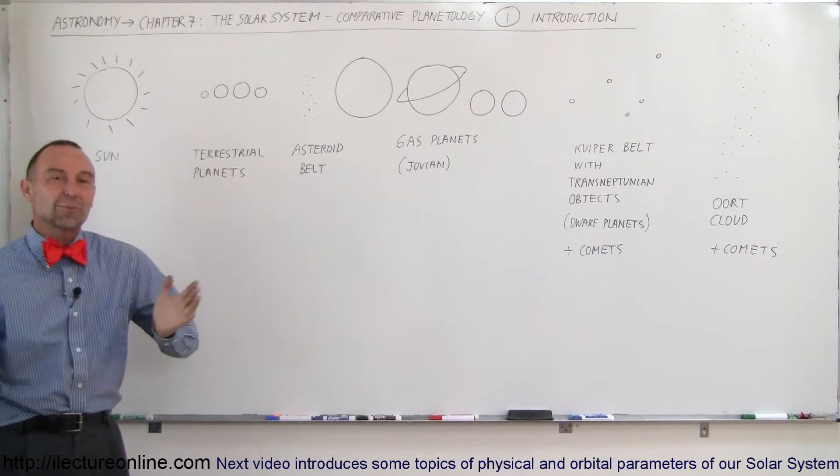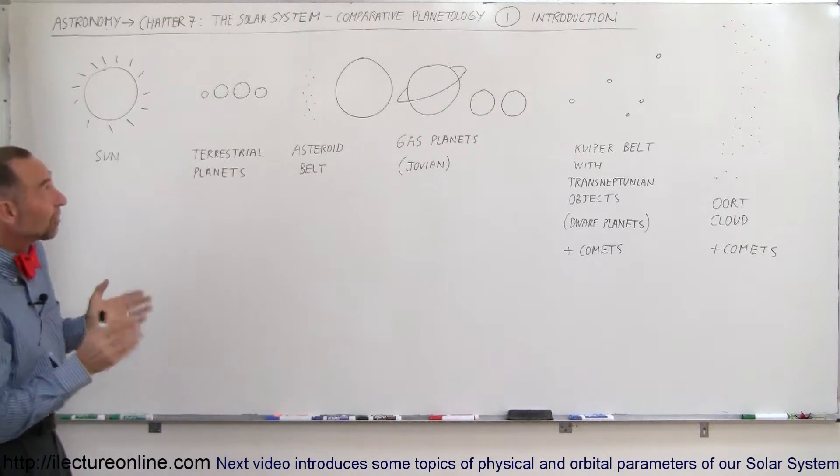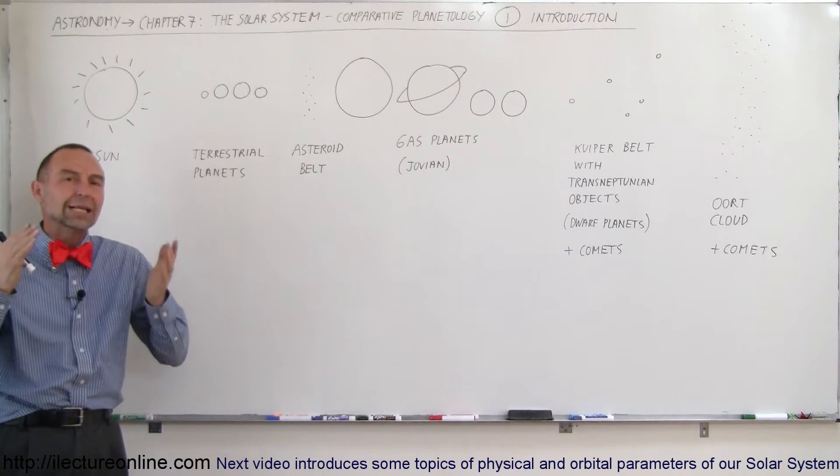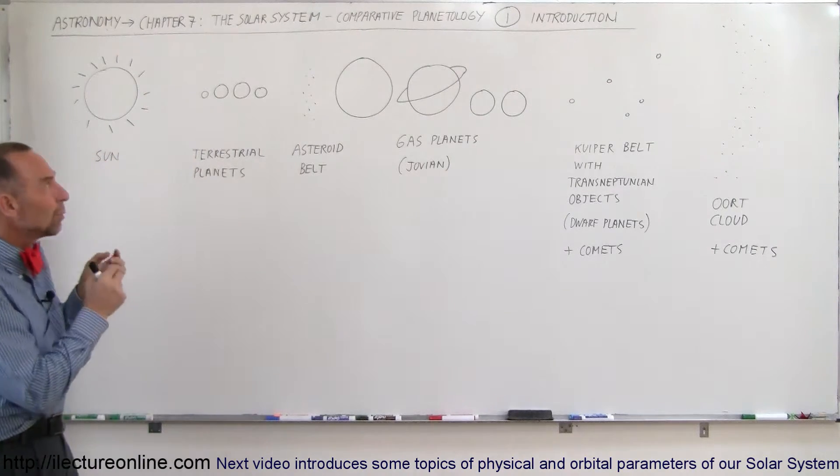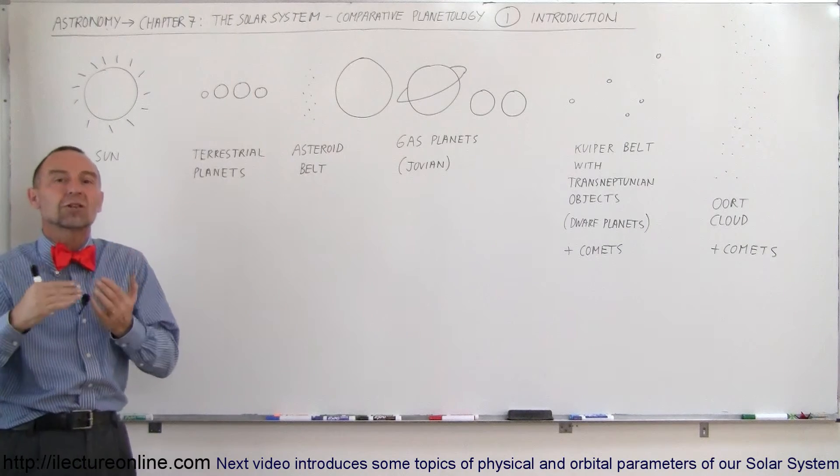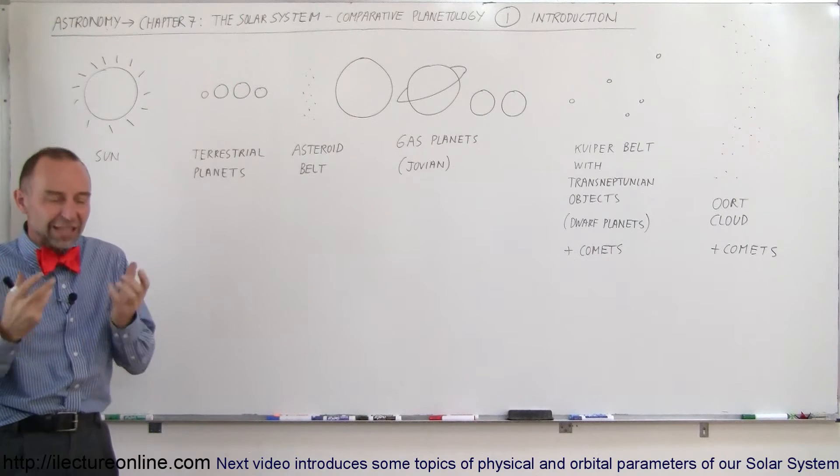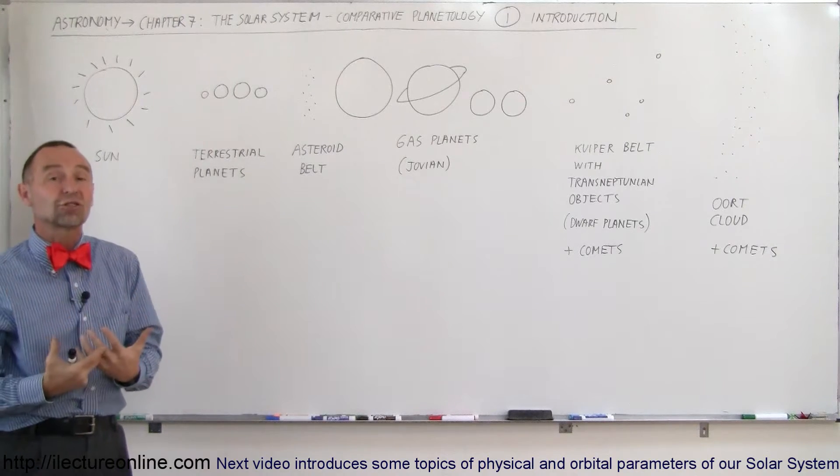Welcome to Our Lecture Online and now we're starting a brand new chapter in astronomy, chapter 7, and it's about the solar system. We're talking about the solar system in a unique way. We're going to do it in what we call comparative planetology. We're going to compare the different planets in all kinds of different ways to get a feel for our solar system.